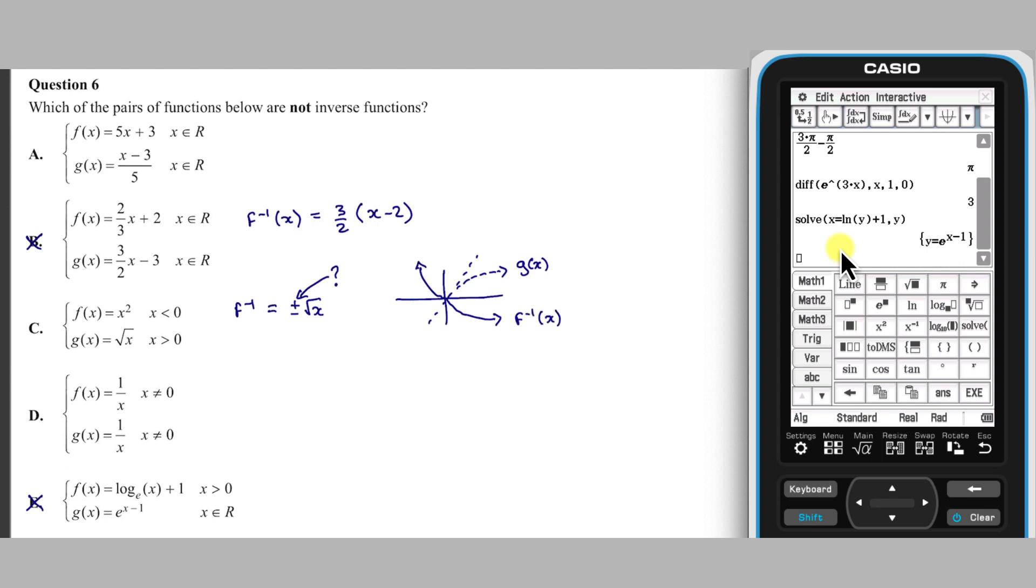But g of x looks like this. So the inverse of f of x would have to be the negative square root of x, and so the functions in option C are not inverses, and so this is our answer.